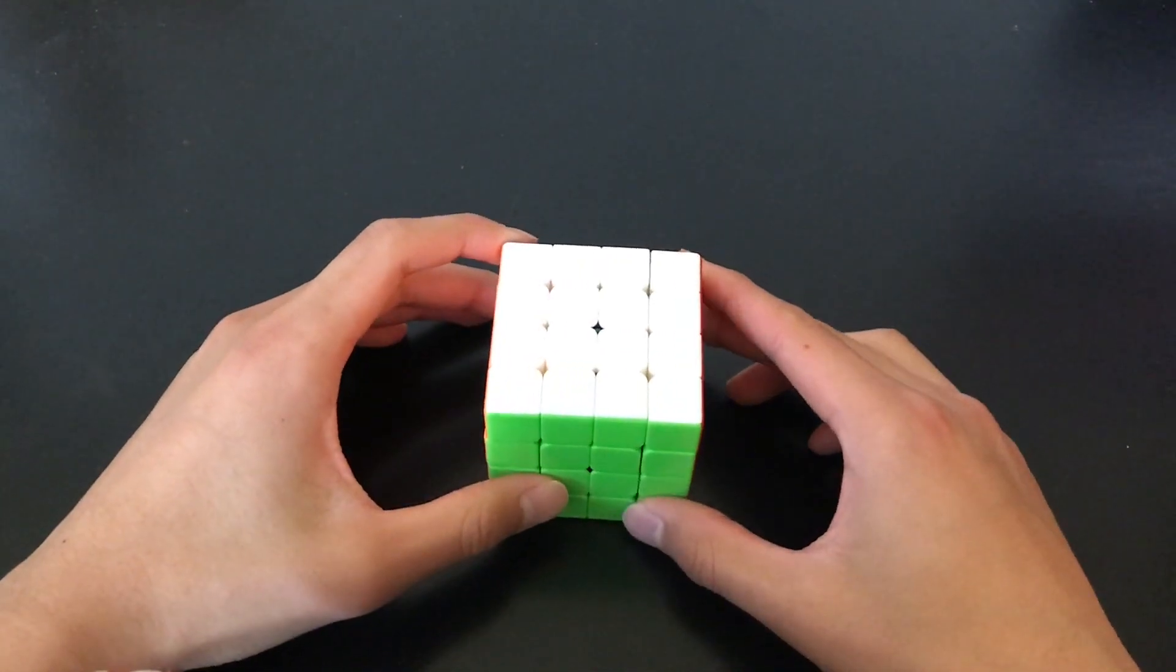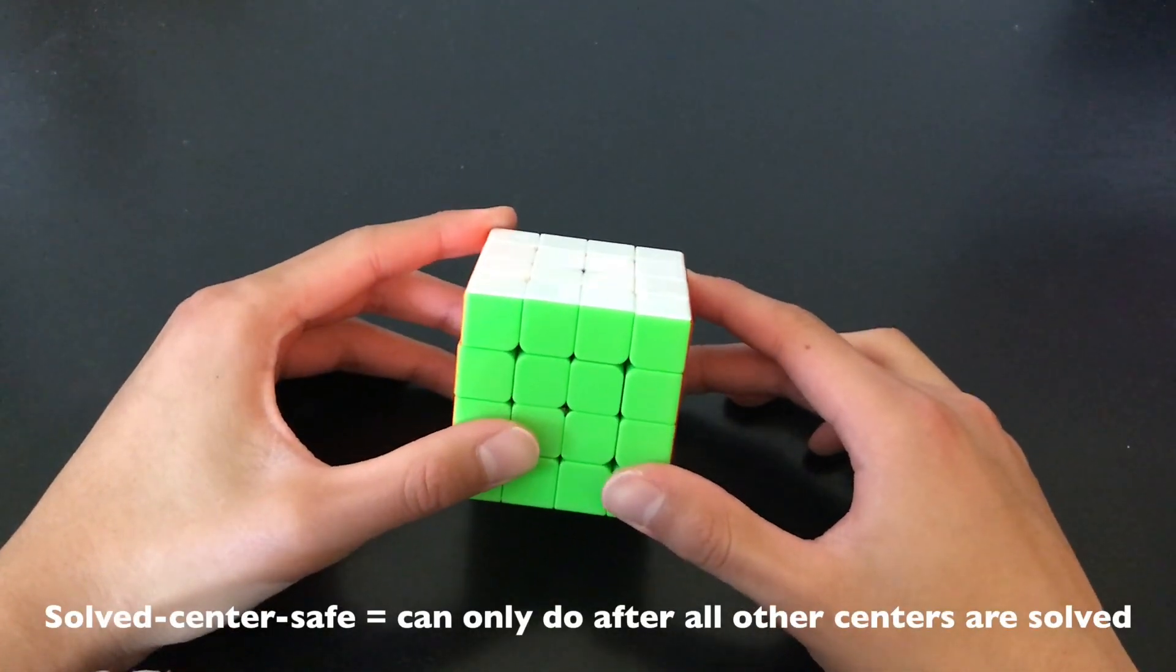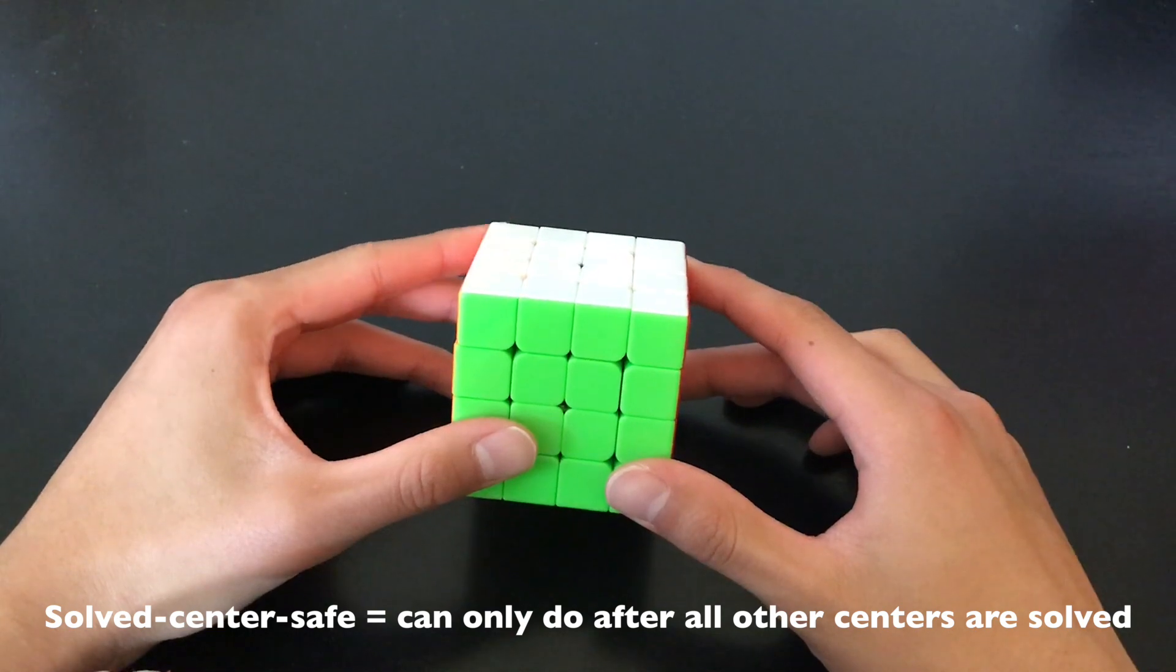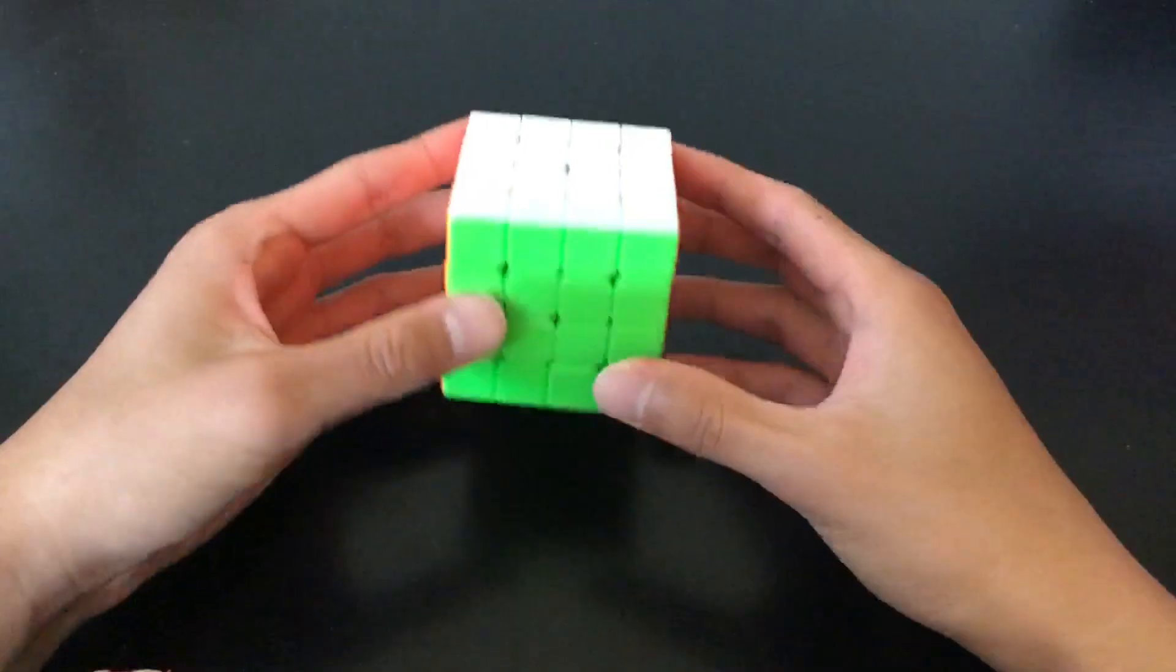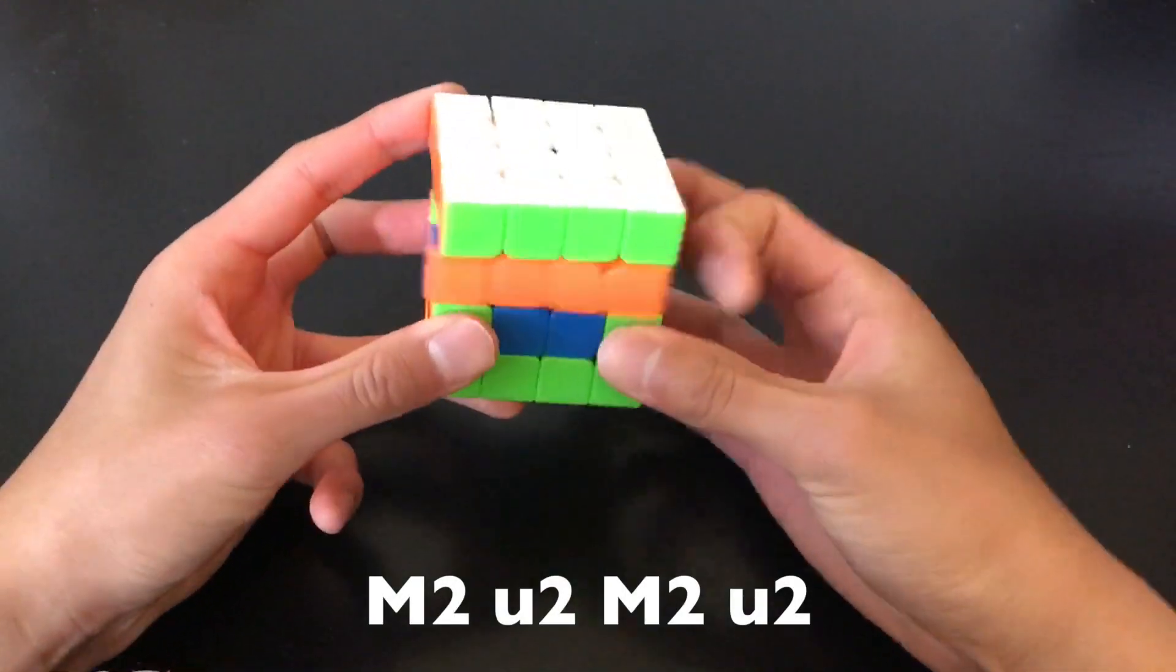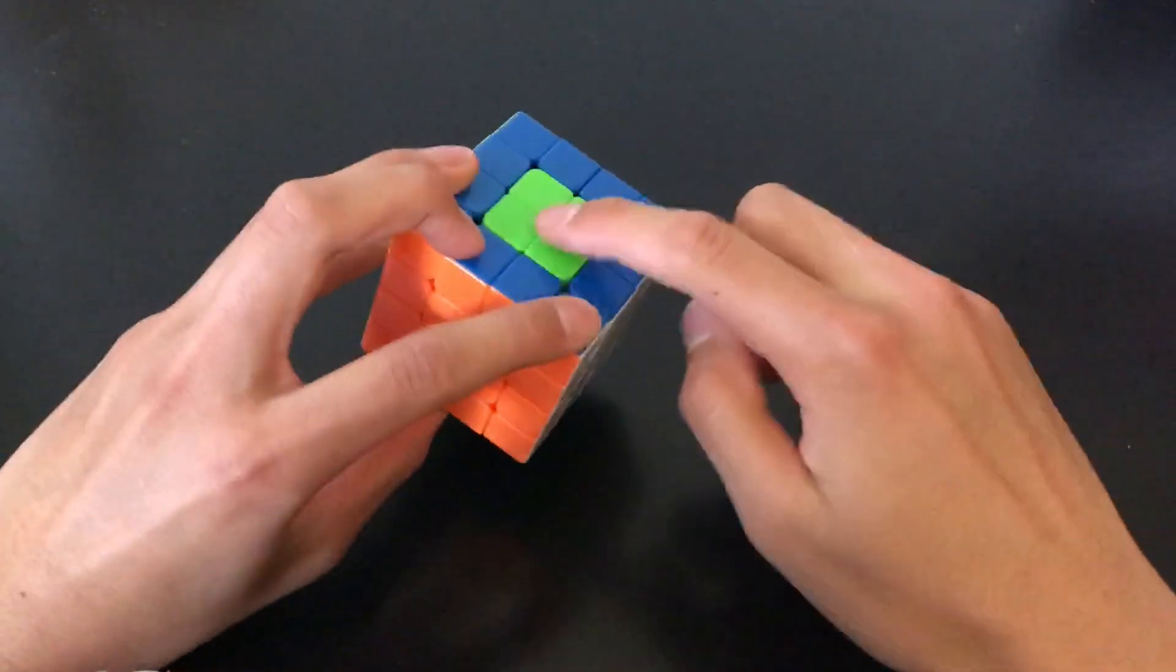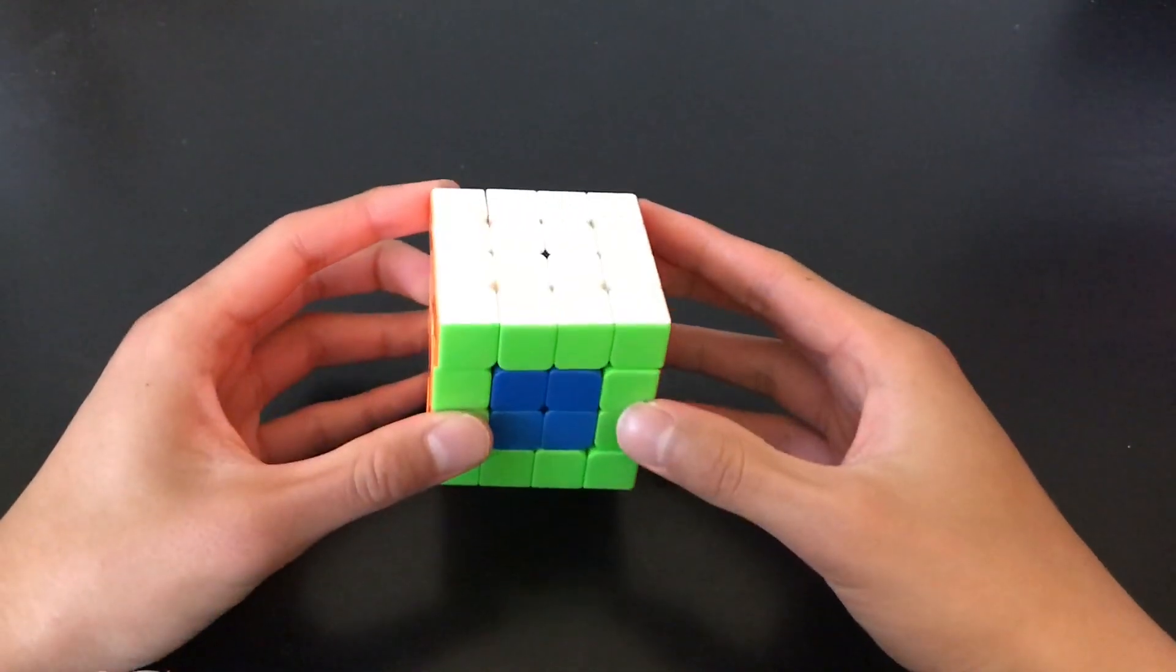Some two-center, two-center algs are only solve center safe because they cycle centers on the same face. This means we can only do them after we have solved all the other centers. There are also algs like M2 U2 M2 U2 that swap entire centers. But cases where we can use this are really rare.